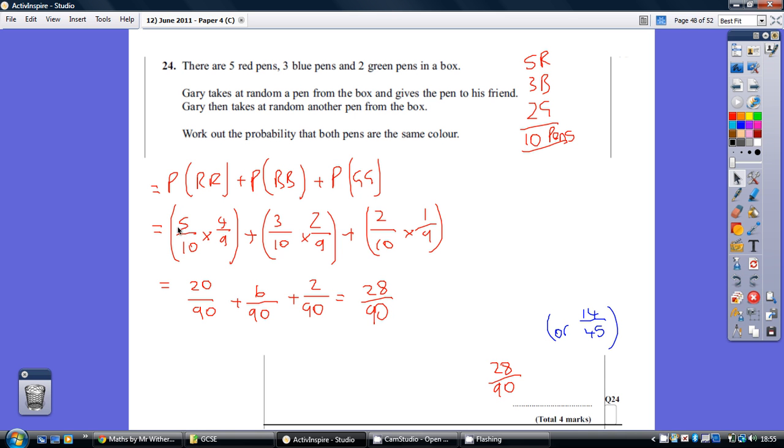To multiply fractions is top times top, bottom times bottom, that's 20 over 90. Now, don't simplify these. Keep it all over 90, then it's a lot easier later on.